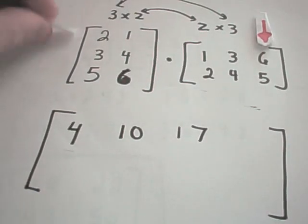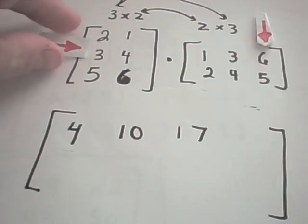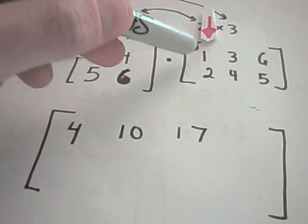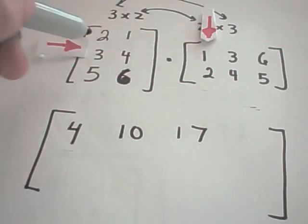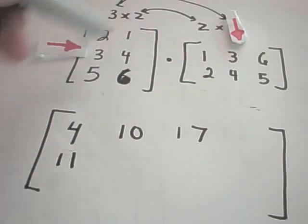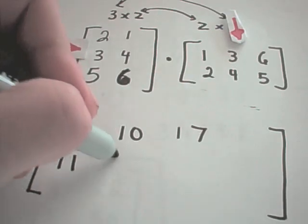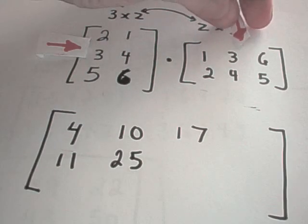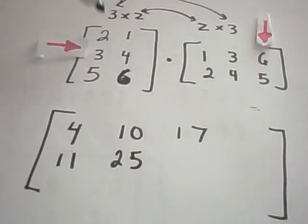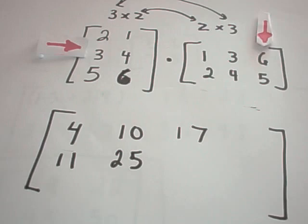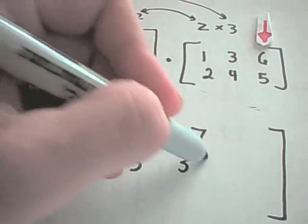And now I move to the second row and I start this procedure all over again. So 3 times 1 is 3, 4 times 2 is 8, 3 and 8 is 11. I go to the next column. 3 times 3 is 9, 4 times 4 is 16, 9 plus 16 is 25. I move over to the next column. 3 times 6 is 18, 4 times 5 is 20, 18 plus 20 is 38.